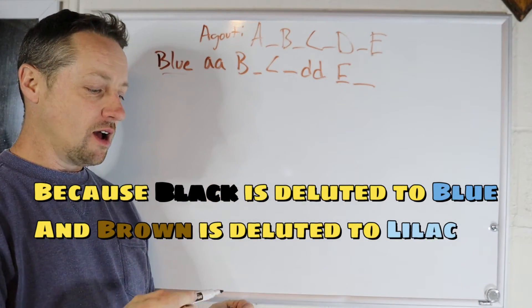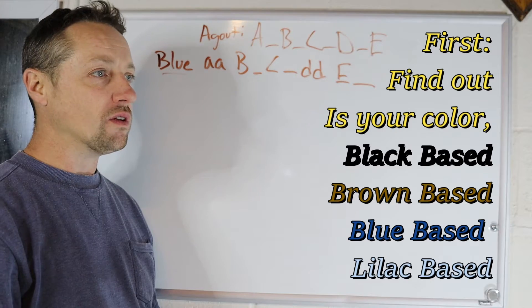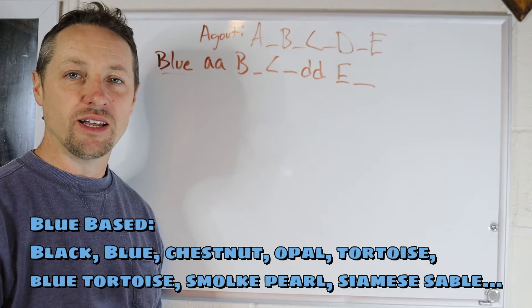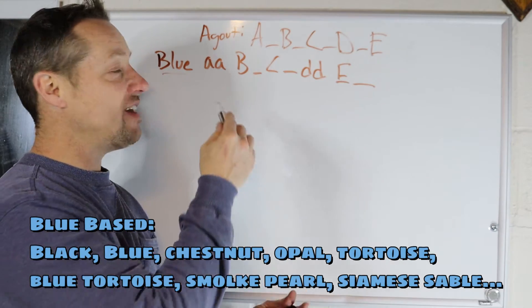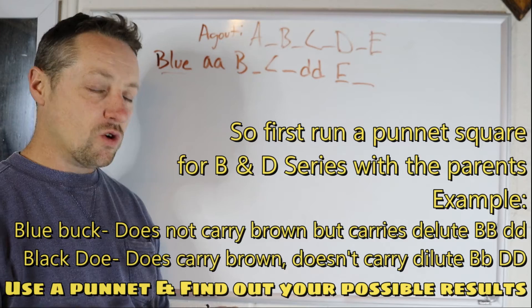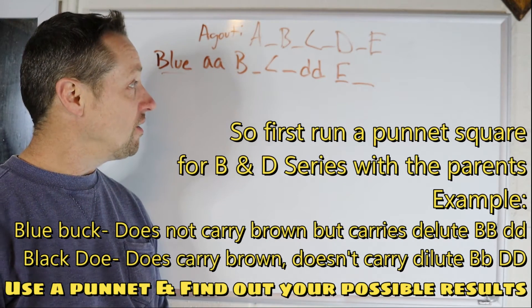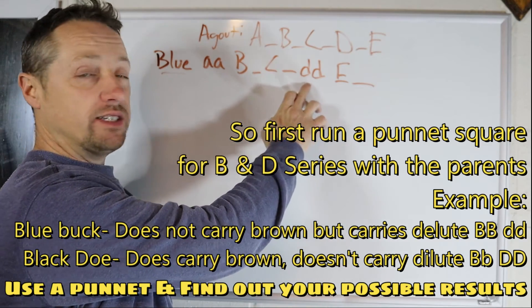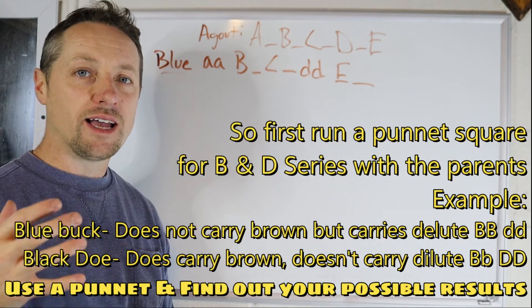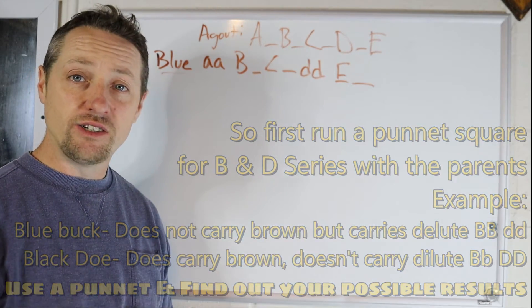So when it comes to blue, you're going to be talking about black, blue, tortoise, opal, the list goes on. I don't have them all memorized, but these are colors that you're always going to have that capital B. In a lowercase b, those would be all chocolate or lilac based colors. And then moving over to lowercase d's, these are going to...